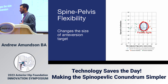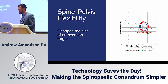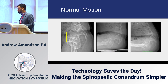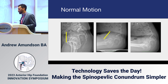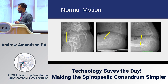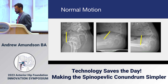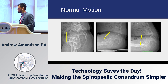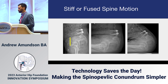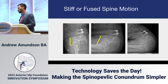In normal motion, when you sit the pelvis rolls back, and when you roll forward the pelvis helps compensate as well, reducing the range of motion that the femur needs to rotate. With a stiffer fused spine, the pelvis is not rolling and helping the hip through all of that range of motion.